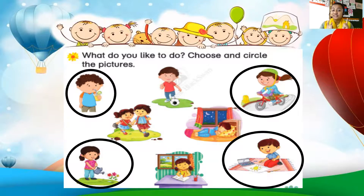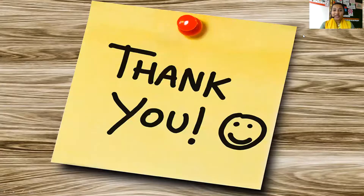Now what you have to do is circle the activity which you like. This worksheet is there in your general awareness book. You can just complete the worksheet and send me a photo of it. So now you know what the concept is about — the concept is about the likes and dislikes of ourselves. We may like doing something, but the same way we don't like doing something. Please complete this worksheet and send it to me. I hope you all understood. Thank you.